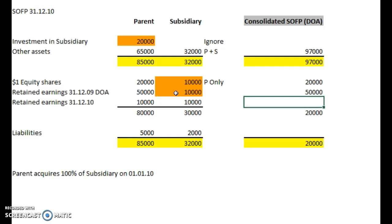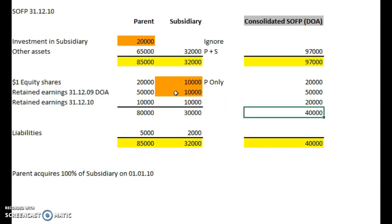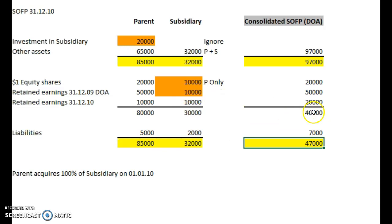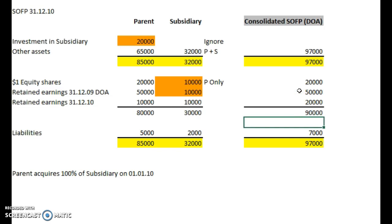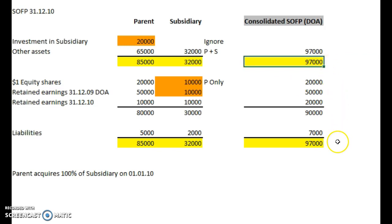That 10,000 was earned by the subsidiary before it was owned by the parent, so it's not included in our consolidation. So it's just 50,000 here, and then the post-acquisition earnings — we add both of these together, so that's 20,000. We now have total assets of 97, equaling total equity and liabilities of 97. So it's a balance sheet — these two should balance, and they do.